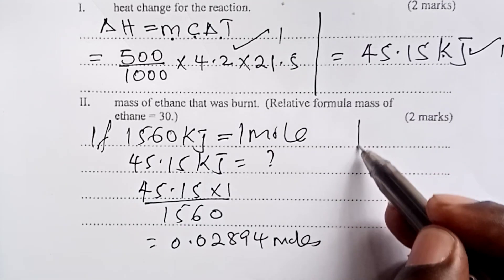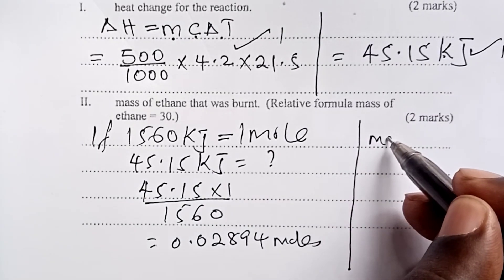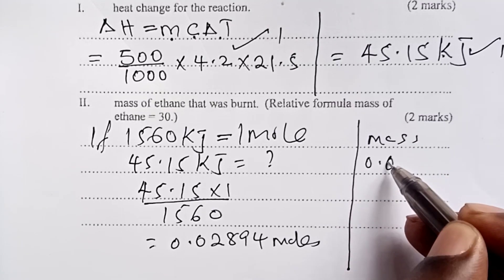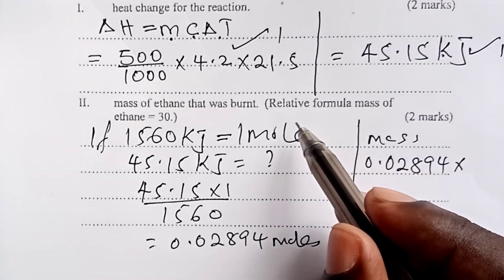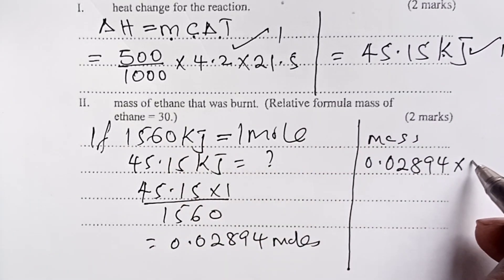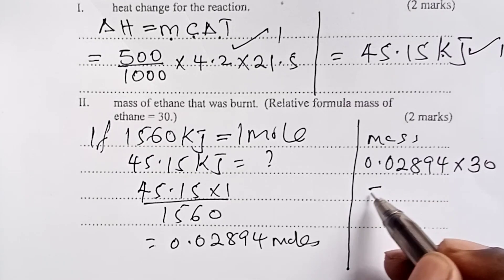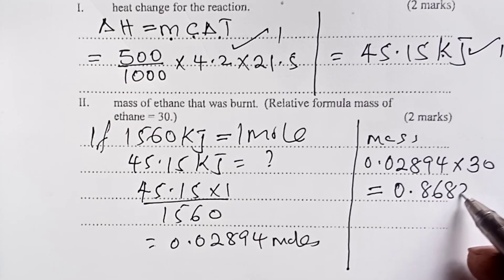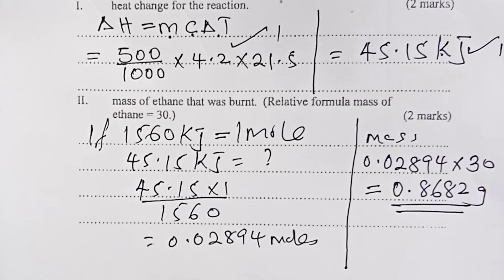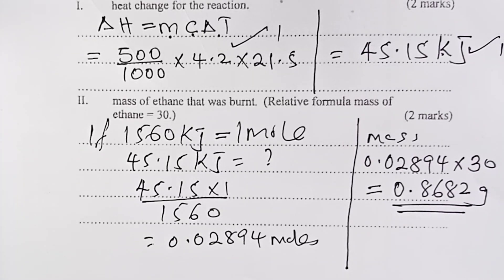From here, to get mass, I'll simply multiply number of moles by the mass, the formula mass, the relative formula mass, which the examiner has given me as 30. And this gives me 0.8682 grams. Students, with that, we've come to the end of a sample question on enthalpy changes as tested in the year 2008.